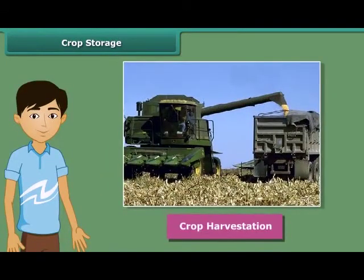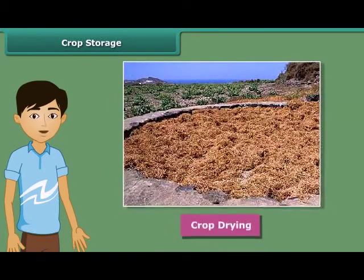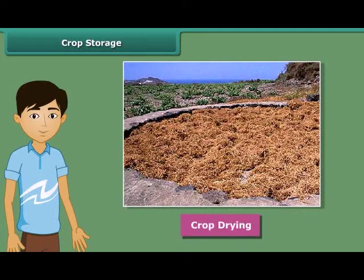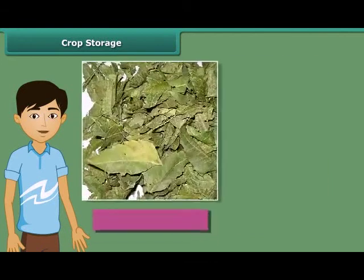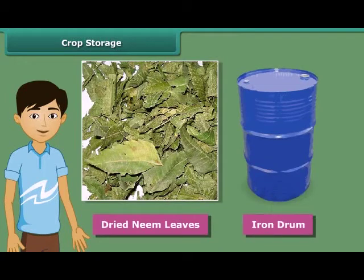Once harvesting is done, crops are stored in huge storages. We should take some precautions to store crops, because if the harvested grains are stored without drying, they may get spoiled or attacked by organisms and thus will lose their germination capacity. So the grains should be properly dried in the sun to reduce the moisture in them. Farmers store grains in jute bags or metallic bins, but for large-scale storage, they use silos and granaries. People also keep dried neem leaves in iron drums for storing food grains, because dried neem leaves protect the grains from pests and microorganisms.